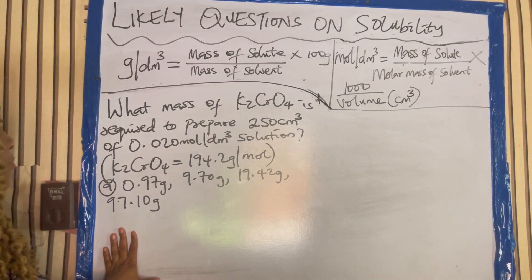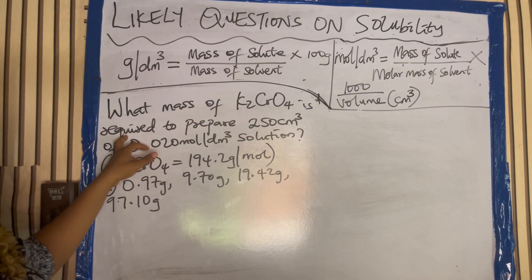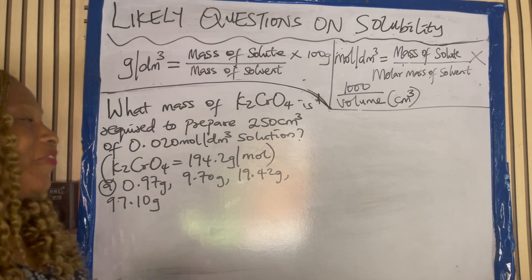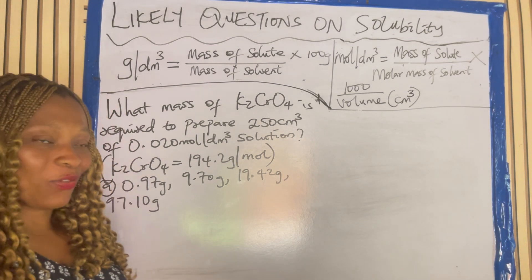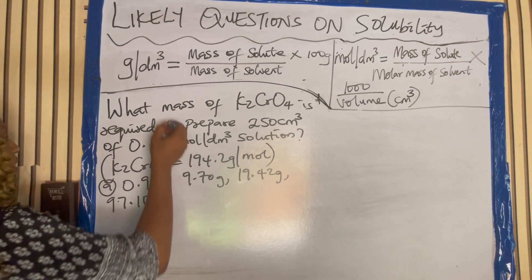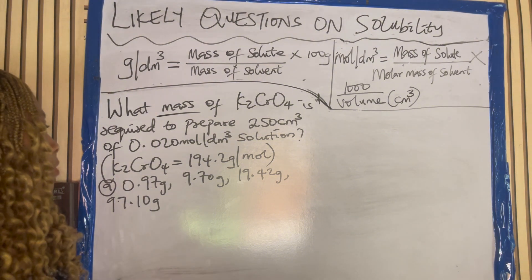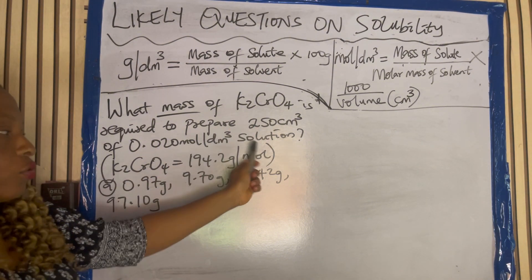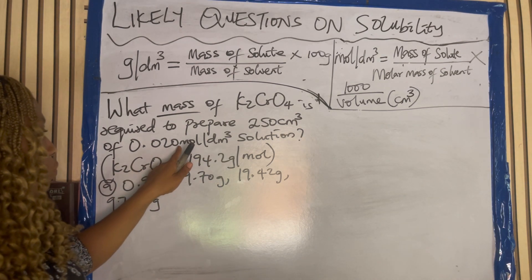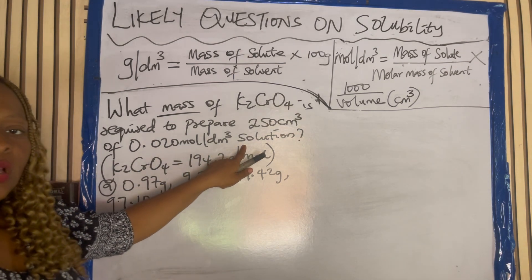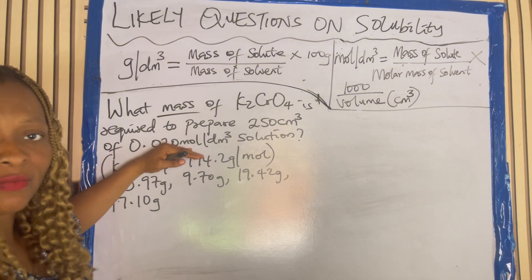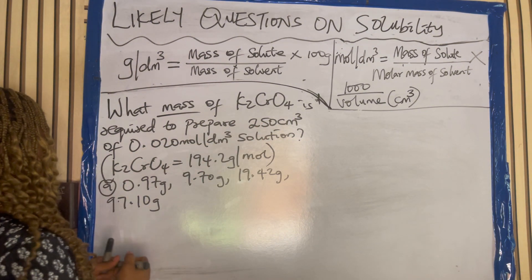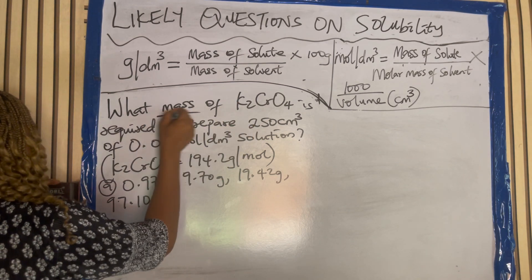Let's look at this question. What mass is required to prepare this solution? Very interesting question. Here now, you are asked to find the mass — to prepare a 0.020 mole per dm cube solution. So this is the solubility. We are asked to find the mass of the solute.